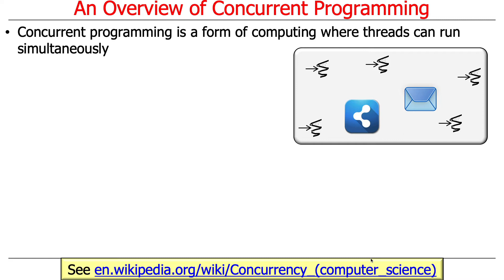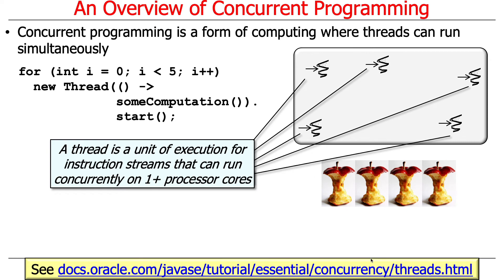Here's a picture illustrating this: we've got a process — the grayish rounded rectangle — with a bunch of squiggly lines inside representing threads, communicating by sharing information or passing messages. A thread in Java is a unit of execution for instruction streams that can run concurrently on one or more processor cores.